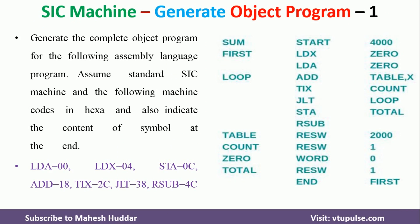To convert an assembly language program into object code, we need the machine equivalent values for all the instructions — the mnemonic codes — which are also given to us. For example, LDA is equivalent to 00, LDX is equivalent to 04, and so on. Considering these particular things, we have to convert this assembly language program into machine-understandable language, or the object program.